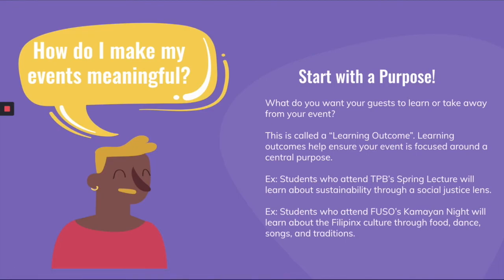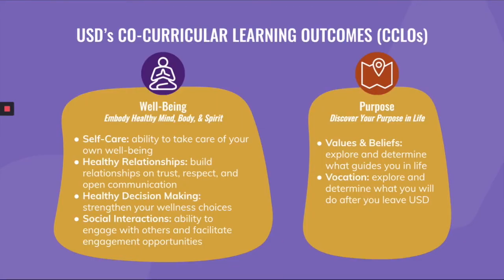We're on our last section. With all this information about event planning, how do you make sure your events are meaningful? Start with a purpose — what do you want your guests to learn or take away? This is called a learning outcome, and it helps make sure your event is focused around a central purpose. USD also has co-curricular learning outcomes (CCLOs) for all undergraduate students. The first is well-being: the ability to embody a healthy mind, body, and spirit, including dimensions like self-care, relationships, and decision-making. The second is purpose: discovering your purpose in life, determining your values, beliefs, future vocation, and what you'll do after you leave USD.